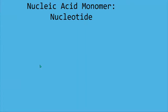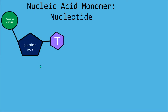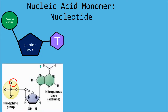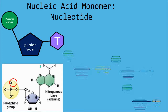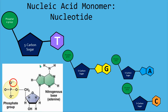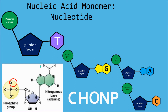Our last macromolecule is DNA and RNA — we call these nucleic acids. That's what the NA stands for. The monomer of a nucleic acid is called a nucleotide. It has three parts: a phosphate, a sugar, and a base. There are four different kinds of nucleotides: A, T, C, and G. In that phosphate group there is a phosphorus, so where carbs and lipids are CHO and proteins are CHON, DNA and RNA are CHONP. This phosphorus is used in the phosphate group of a nucleotide.